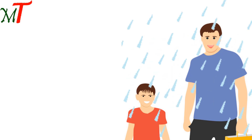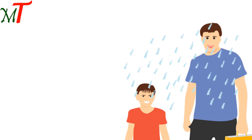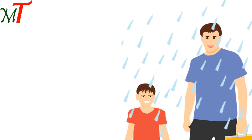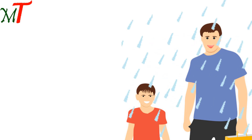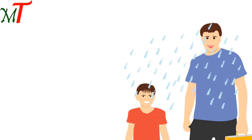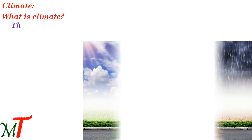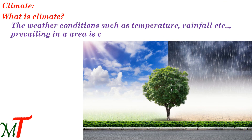What have we learned from this conversation? We must understand the changes in climate and their impact. What is climate? The weather conditions such as temperature, rainfall, etc., prevailing in an area over time is called climate. That means the weather conditions of temperature and rainfall in an area depend on its climate.